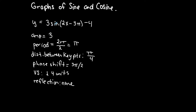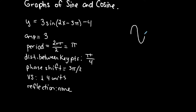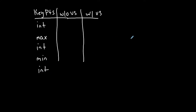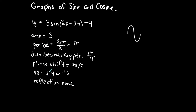To find my key points, I determine what kind of function it is — it's sine. A sine wave looks like a snake: it goes from the center intercept to a maximum, back to an intercept, down to a minimum, and back to an intercept. Since there is no reflection, I don't swap maxes and mins.